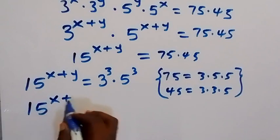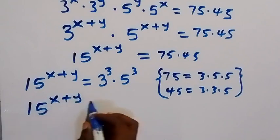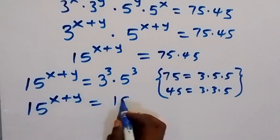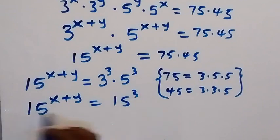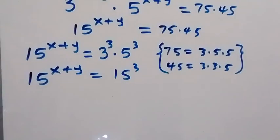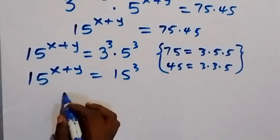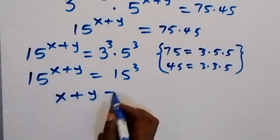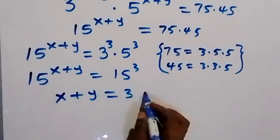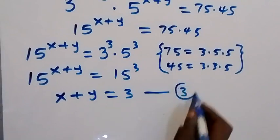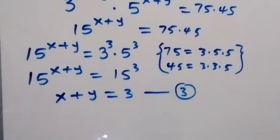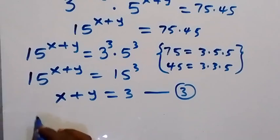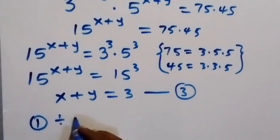So 15 raised to power x plus y equals 15 raised to power 3. Since the bases are the same, we equate the powers: x plus y equals 3. Let's label this as equation 3. Now let's also divide equation 1 by equation 2.